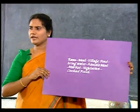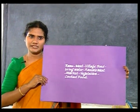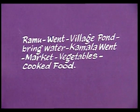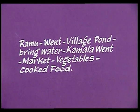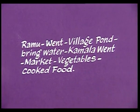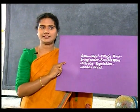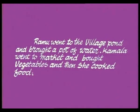Look at some more hints in continuation of the above hints: Ramu went, village pond, bring water, Kamala went, market, vegetables, cooked food. Using these hints: Ramu went to the village pond and brought a pot of water. Kamala went to market and bought vegetables, and then she cooked food.